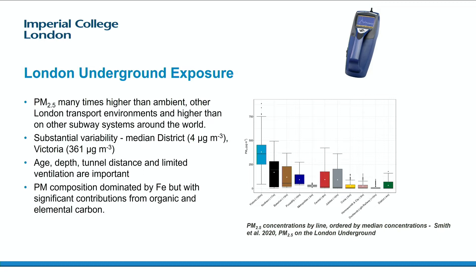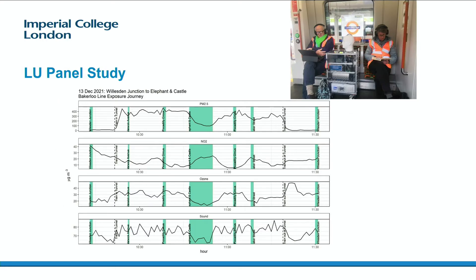PM2.5 in these locations is dominated by the wear from brakes or from wheels and rails. Another study we're doing on the London Underground is a panel study looking at exposure of COPD patients and volunteers on a journey on the London Underground. This is particularly challenging because in the previous study, I calibrated my sensors to London Underground dust because I knew what they were exposed to all the time. However, in this study we're moving between different environments, which is very challenging for a PM measurement that's moving.